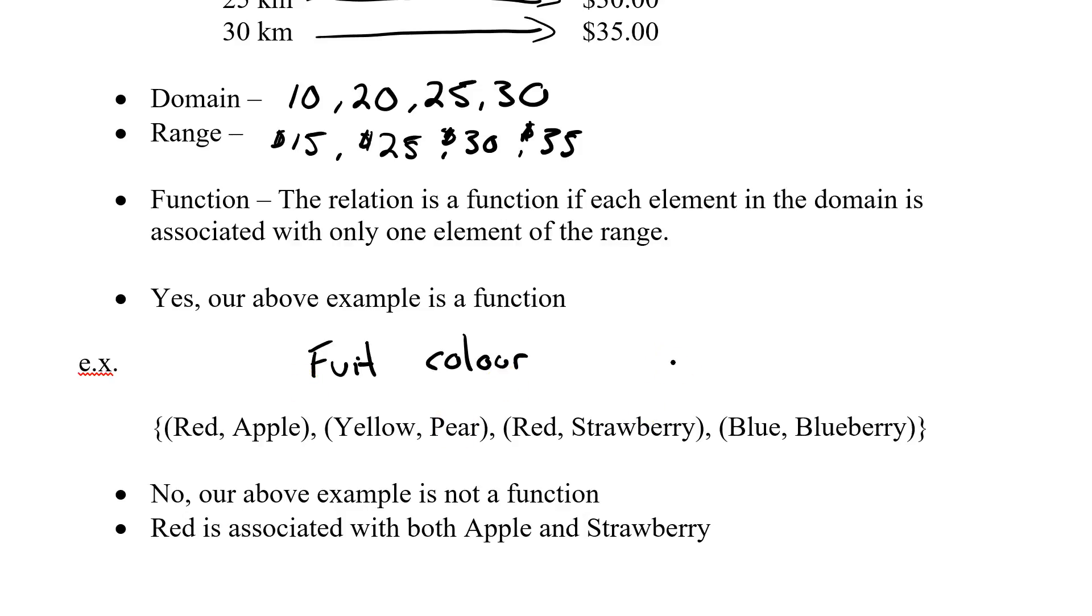So is this a function? Well, no, it's not. You can see that red is associated with apple, and red is also associated with strawberry. So we do not have a function in this case. The yellow going to the pear and the blue to the blueberry, that's fine for a function. But the idea of red going to two parts of the range, that's no good.